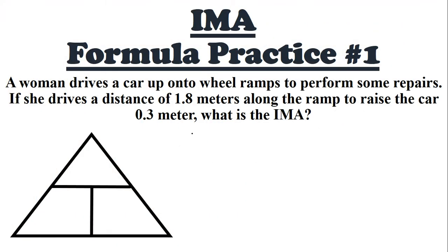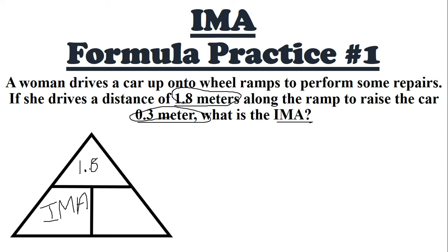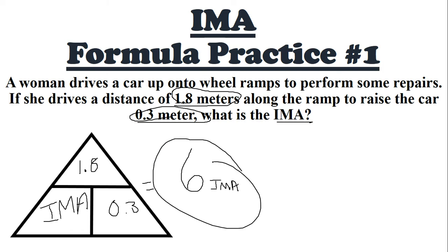Let's do our first practice. A woman drives a car up onto wheel ramps to perform some repairs. If she drives a distance of 1.8 meters along the ramp to raise the car 0.3 meters, what is the IMA? Since we're trying to find IMA, we leave that in the triangle. At the top goes what the person does — 1.8 meters. The bottom is the output distance, what the machine does — 0.3 meters. We divide 1.8 by 0.3, and the answer is 6 IMA.